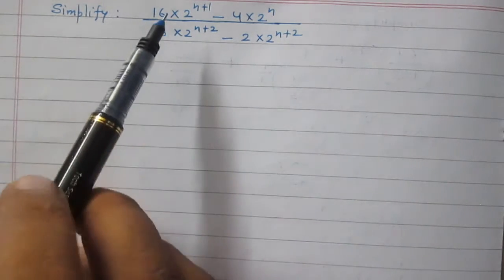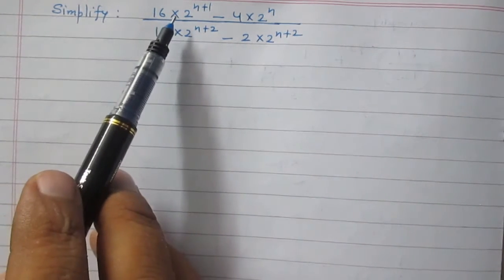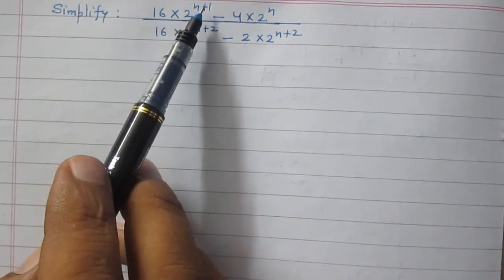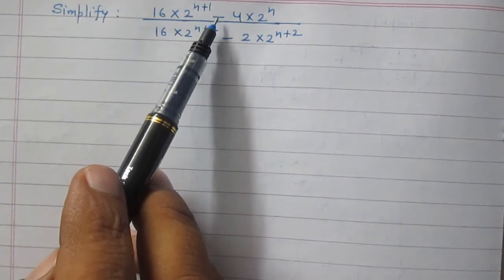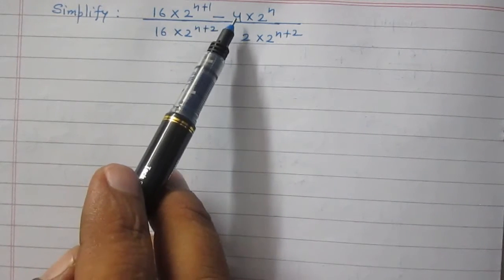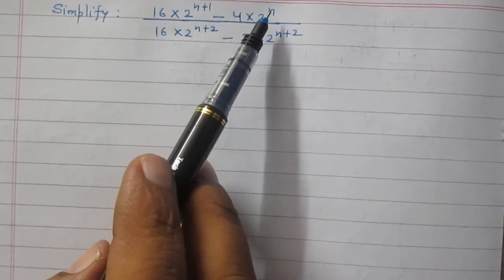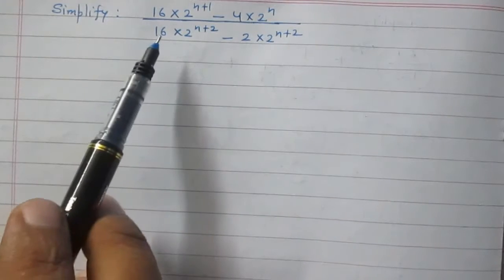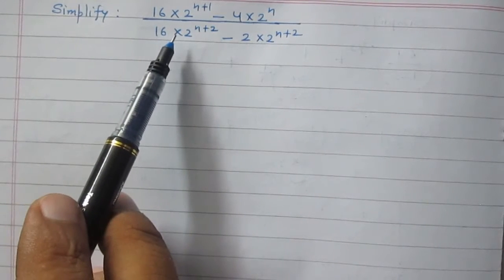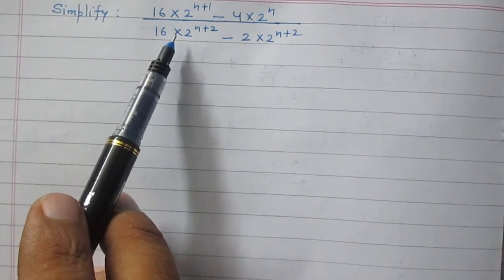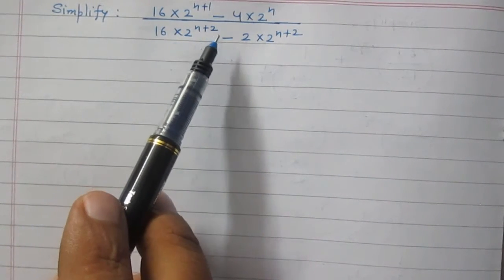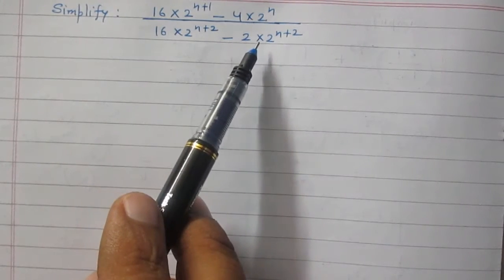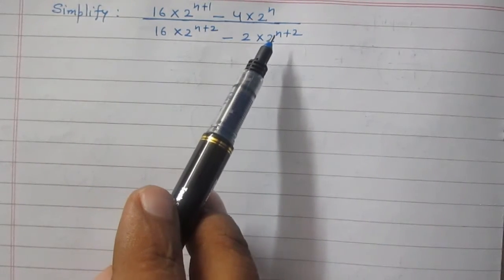Simplify 16 multiplied by 2 raised to power n plus 1, minus 4 multiplied by 2 raised to power n, whole divided by 16 multiplied by 2 raised to power n plus 2, minus 2 multiplied by 2 raised to power n plus 2.